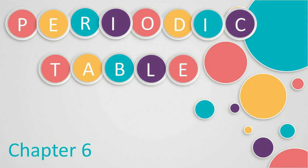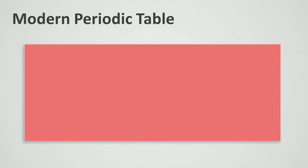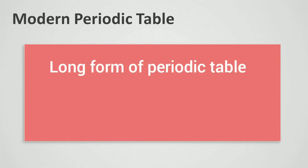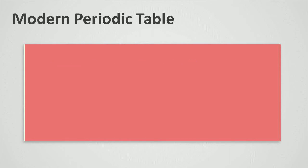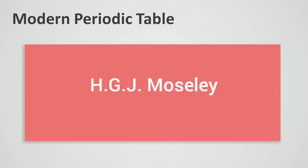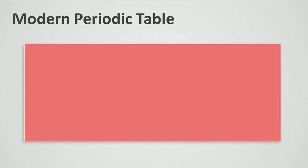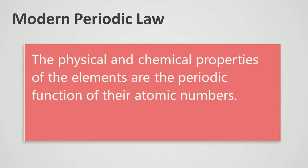Hello everyone. In this video we will study about the modern periodic table, also called the long form of periodic table. Modern periodic table was built by H.G.J. Moseley. He discovered that atomic number is a better basis of classifying elements than atomic weight. On the basis of his work, he developed the modern periodic law, which states that the physical and chemical properties of elements are the periodic function of their atomic numbers.